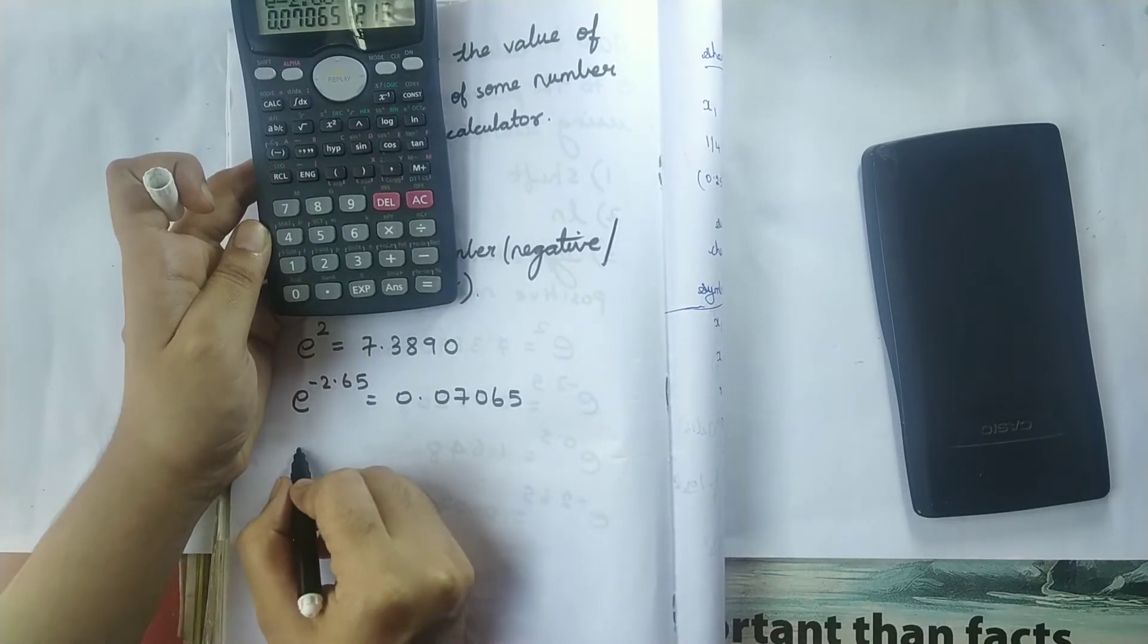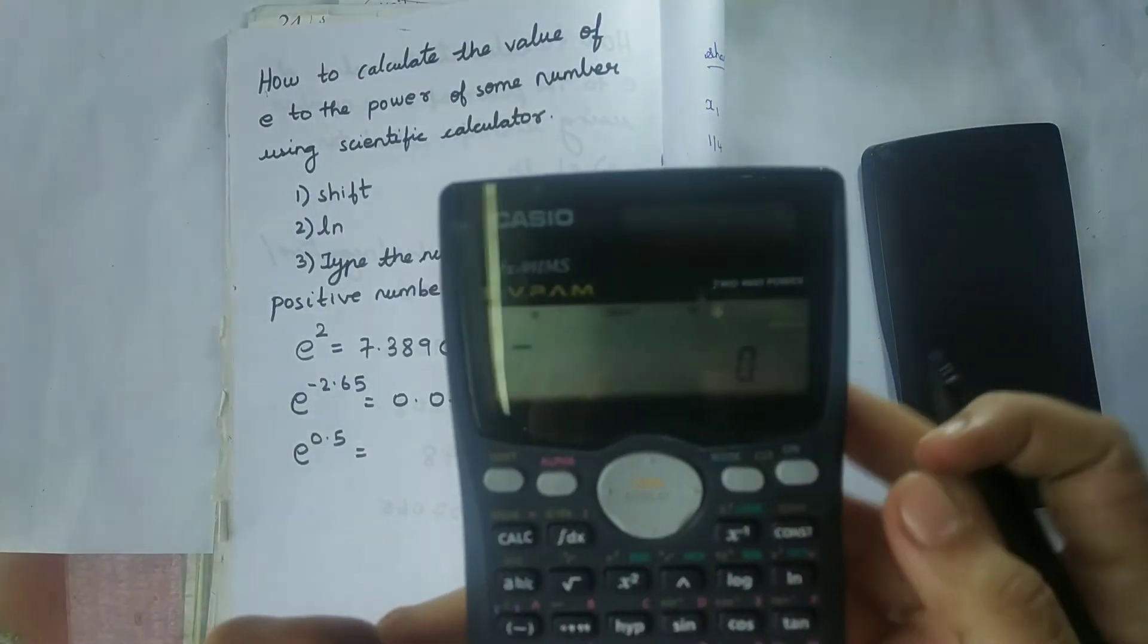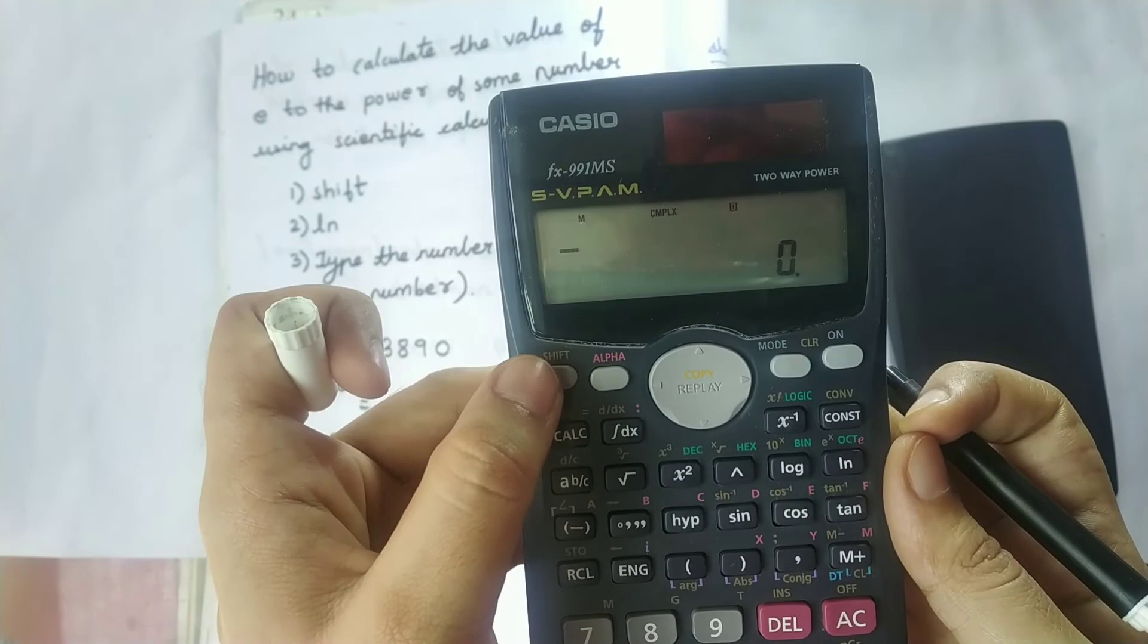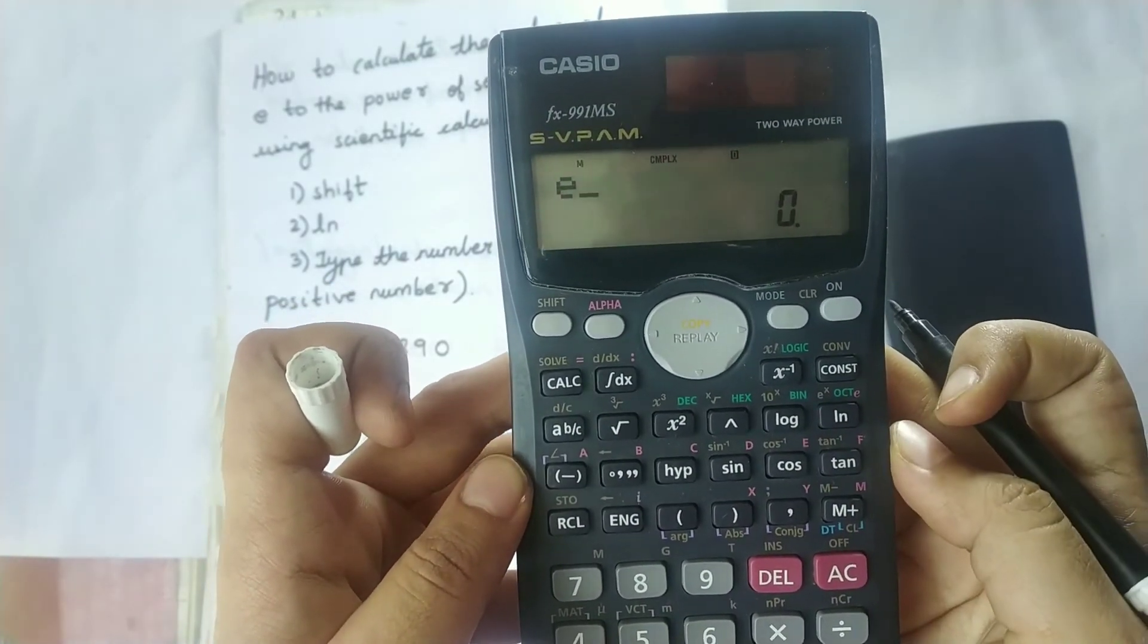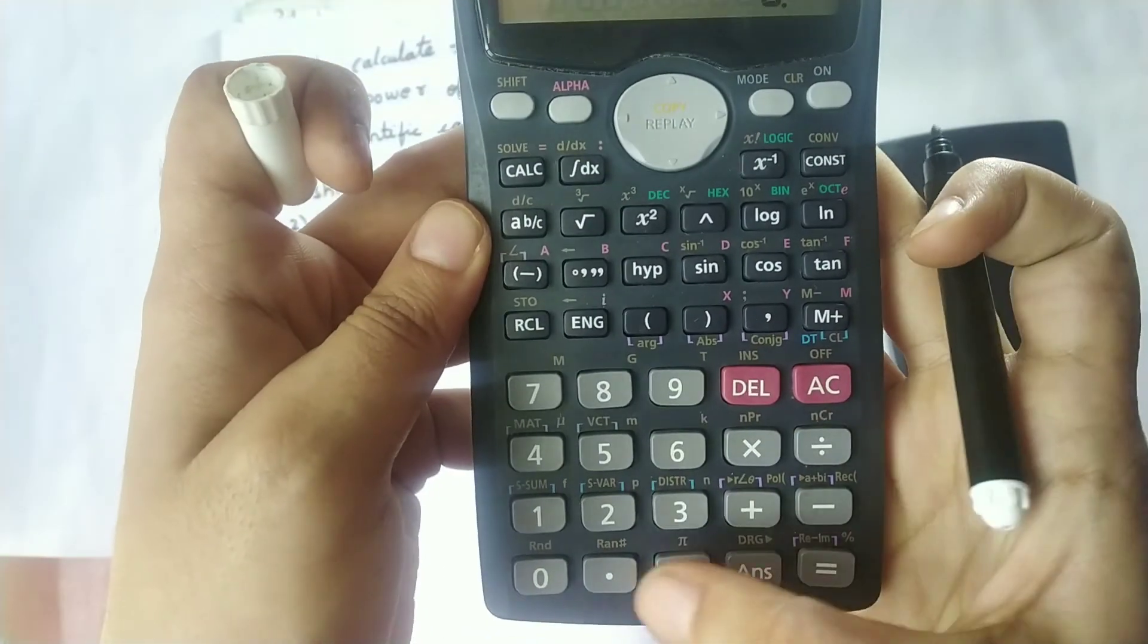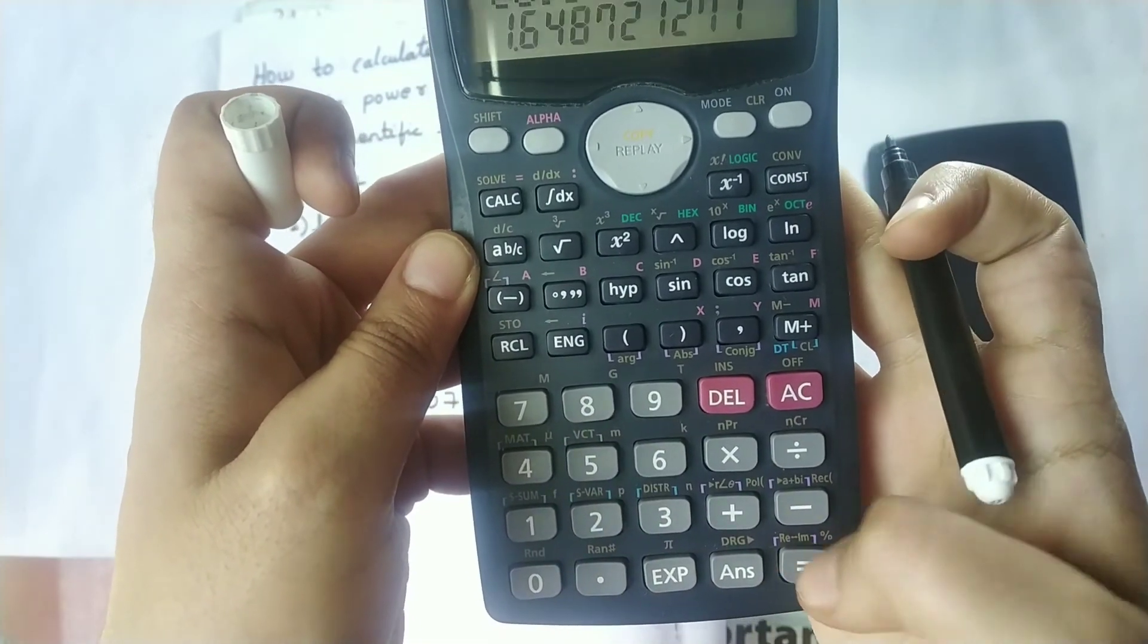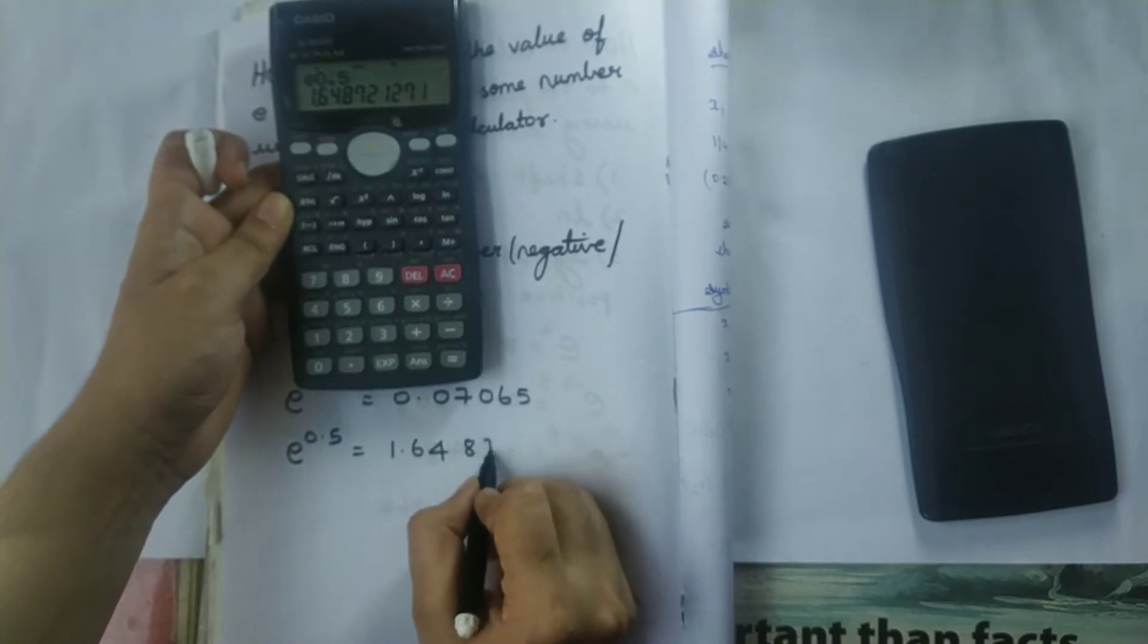Next let us find for e to the power of 0.5. So I have cleared it now. So the first step is I should press the shift. The second step is I should press LN. The third step is I should press the number. So here the number is 0.5. So 0.5 equal to button. So the answer is 1.64872.